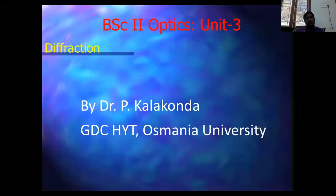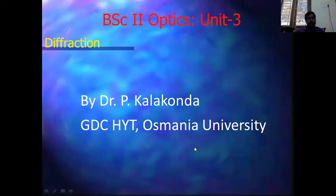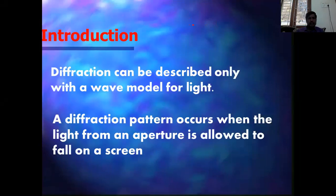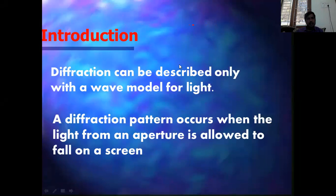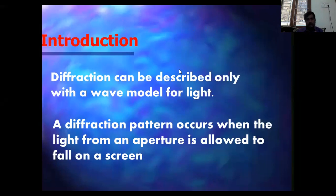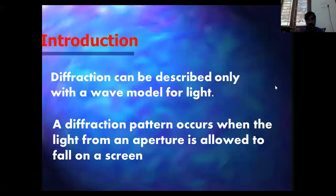We are going to cover one more chapter: polarization. Let me introduce diffraction. Diffraction is the bending or spreading of light because of an aperture. It is a phenomenon where light spreads or bends around any slit or aperture — it could be a circular aperture, a single slit, or a double slit.